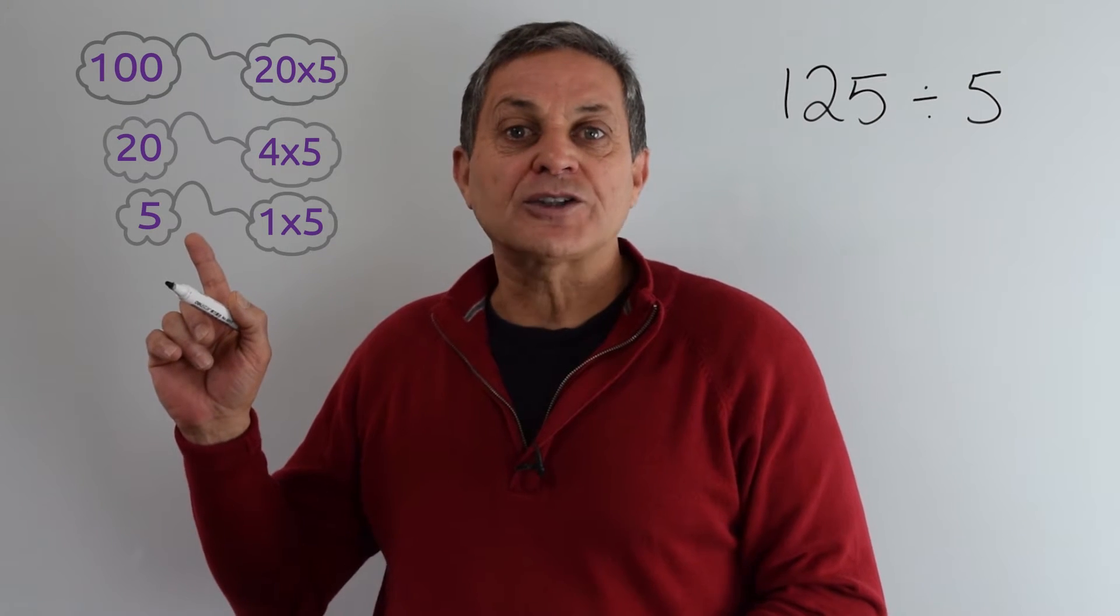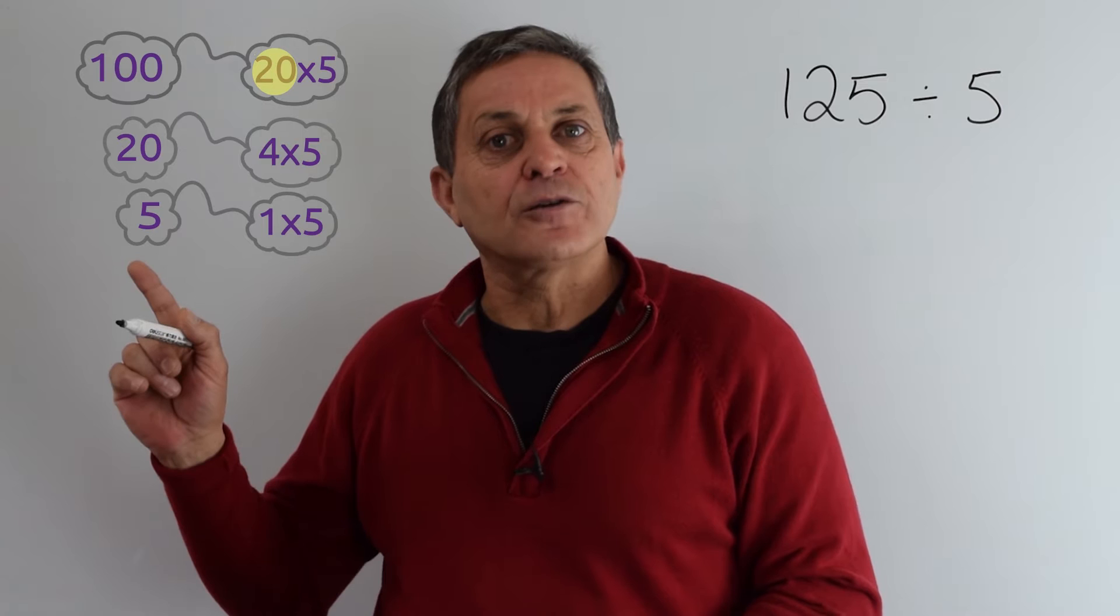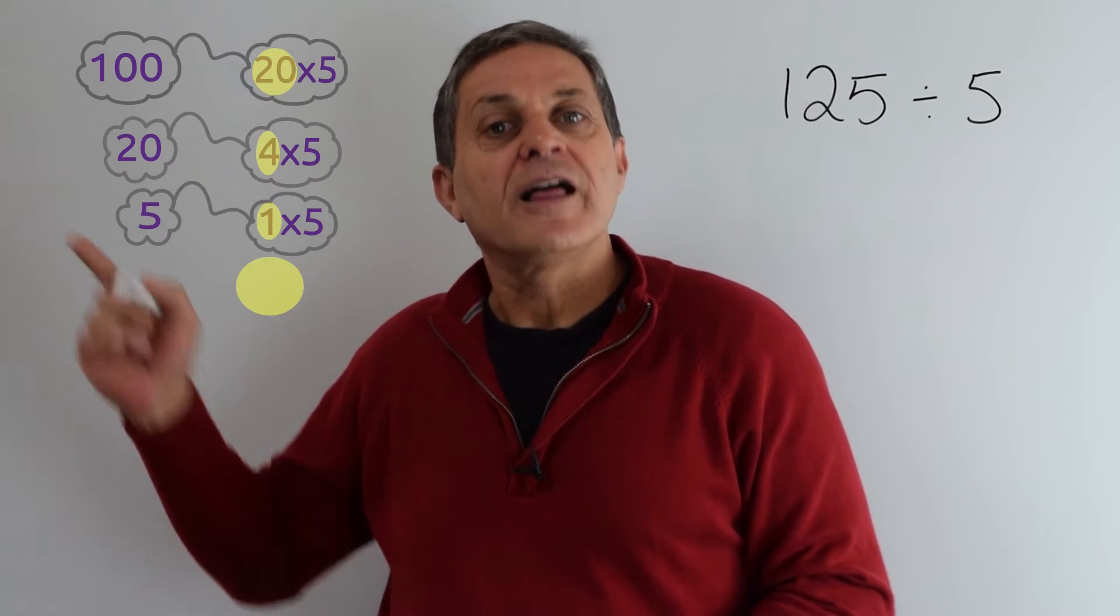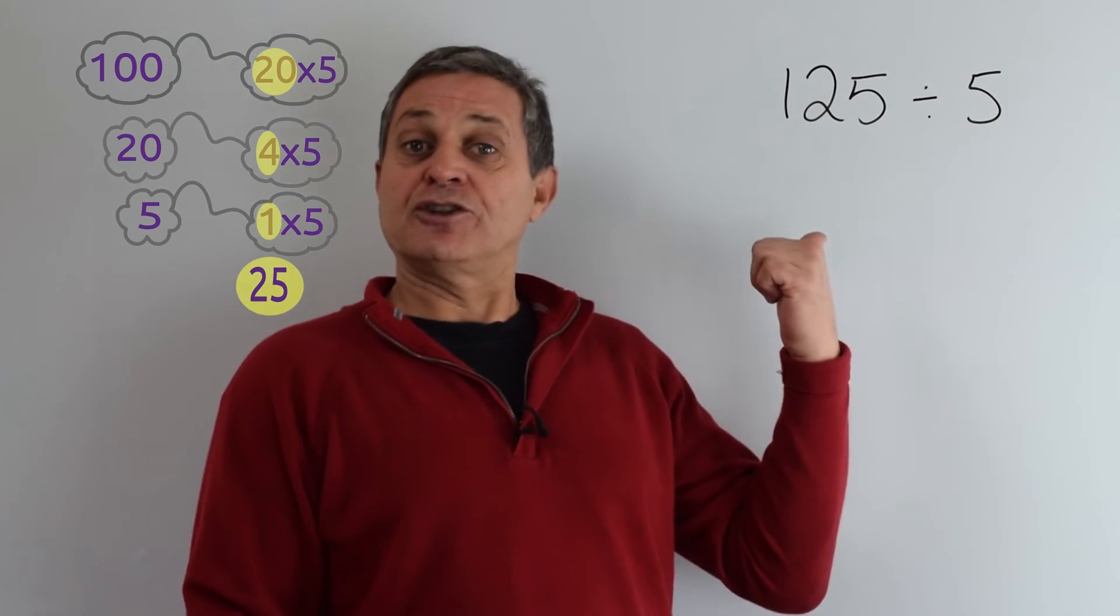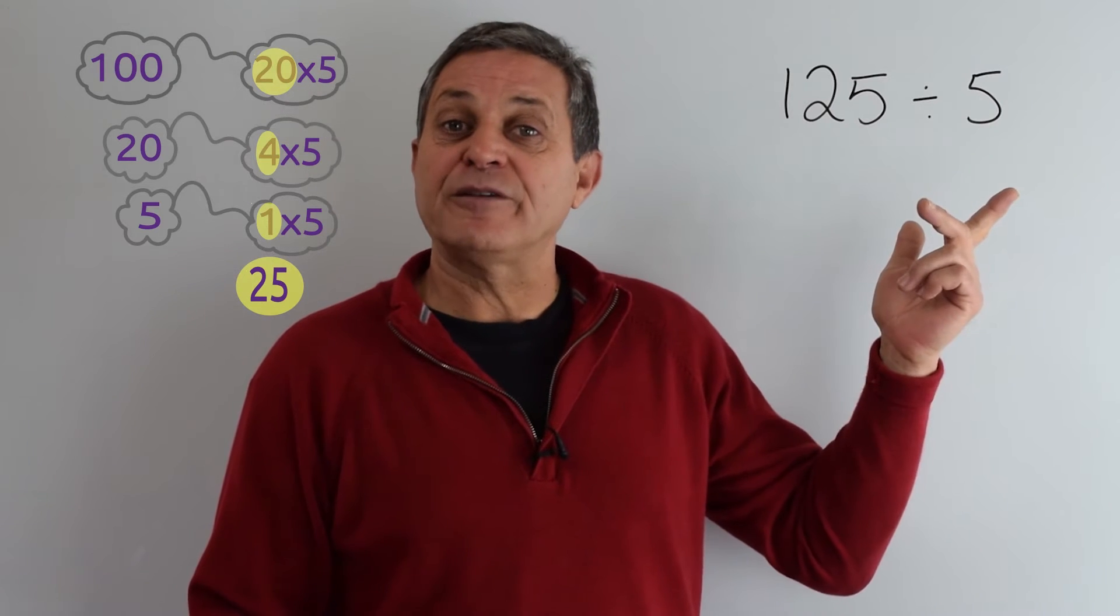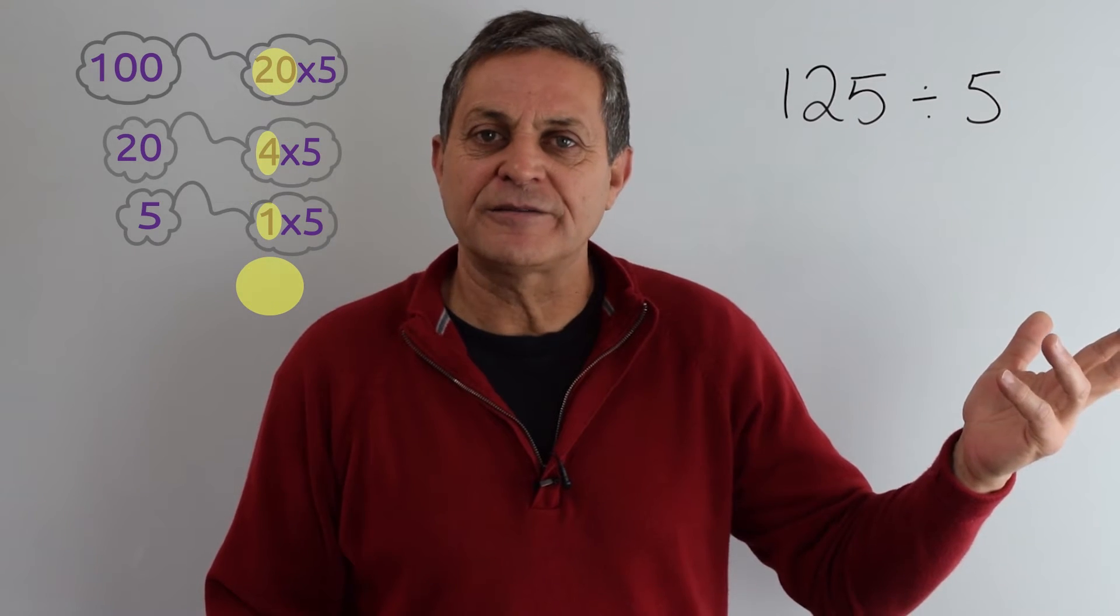So therefore we've got 20 times 5, 4 times 5, and 1 times 5. That equals 25. 125 divided by 5 is 25. That's okay mentally. So how are we going to help our child write this down?